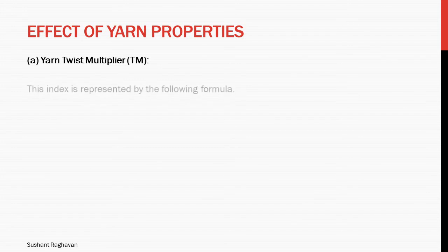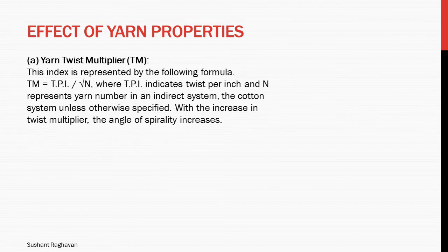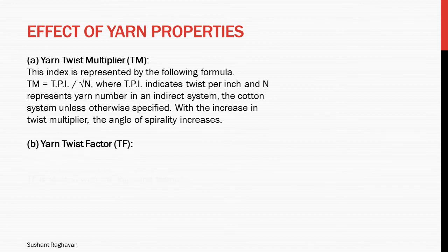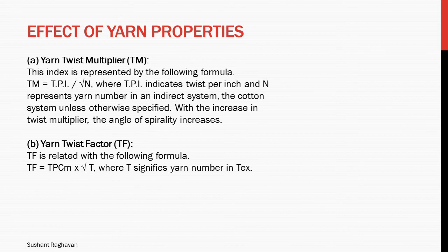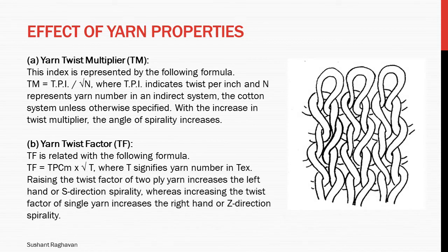Yarn Twist Multiplier (Tm) is represented by the formula: Tm = Tpi ÷ √n, where Tpi indicates twist per inch and n represents yarn number in an indirect system (cotton system). With the increase in twist multiplier, the angle of spirality increases. Yarn Twist Factor (Tf) is related by the formula: Tf = twist per cm × √t, where t signifies yarn number in tex. Increasing the twist factor of a two-ply yarn increases the left-hand or S direction spirality.